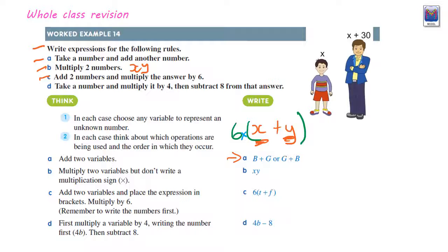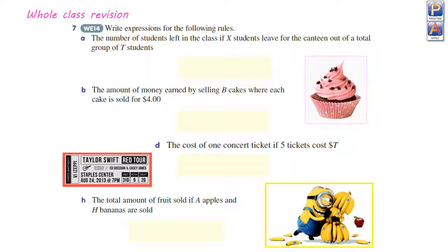And d, take a number and multiply it by 4, then subtract 8. The variable times 4, 4b, and then subtract 8. Alright, there's a bit of revision, have a go at those ones before you do today's lesson.